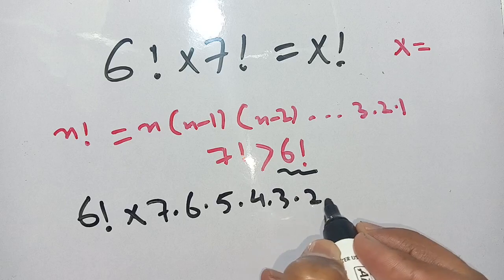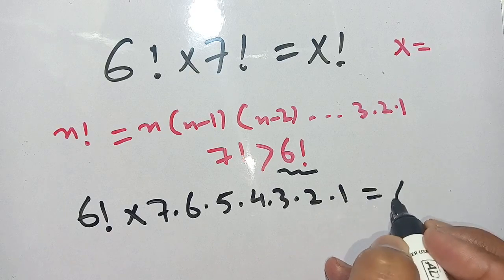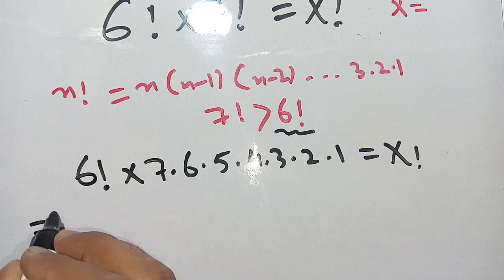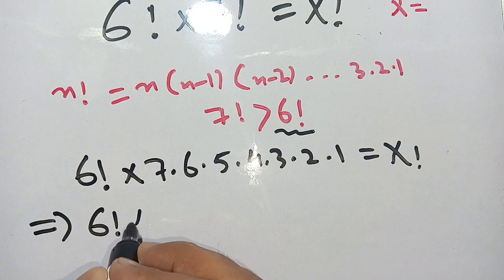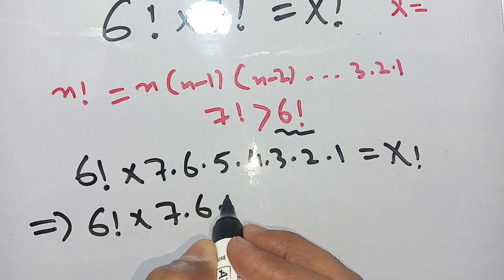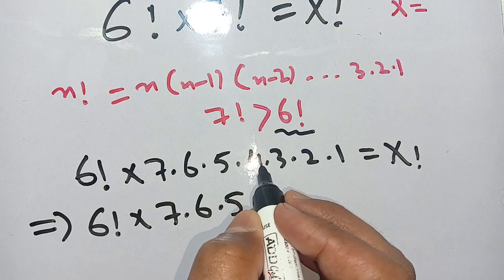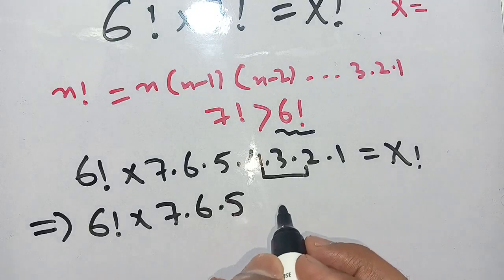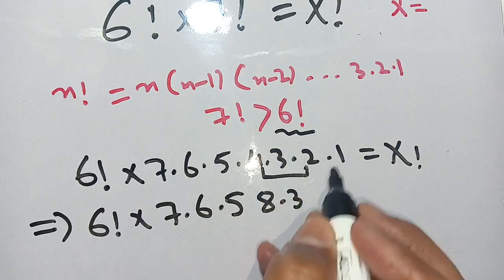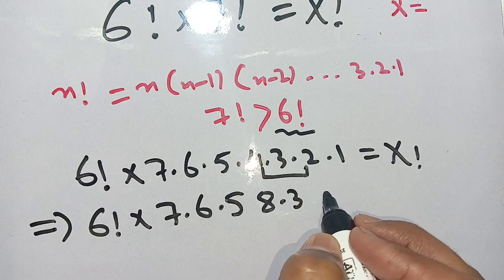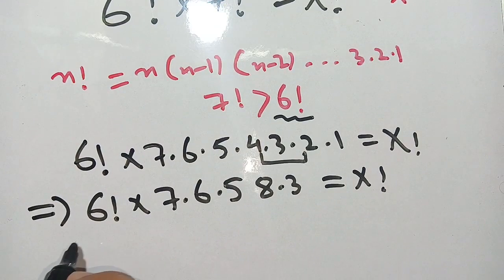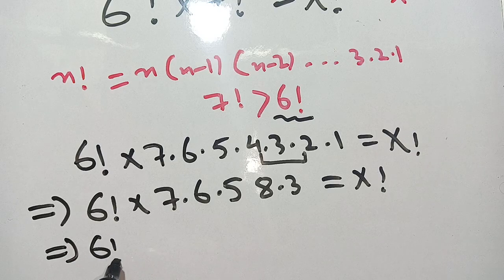When we open 7 factorial it becomes 7 times 6 times 5 times 4 times 3 times 2 times 1, equal to x factorial. In the next step we write this as 6 factorial times 7 times 6 times 5 times, and when we multiply 4 times 2 it becomes 8, times 3 times 1 which gives 3, equal to x factorial.